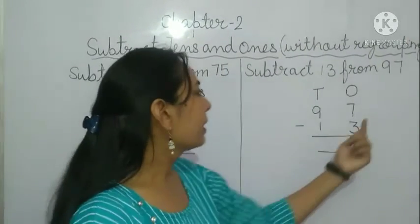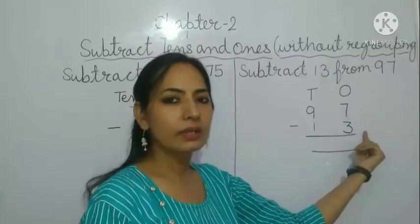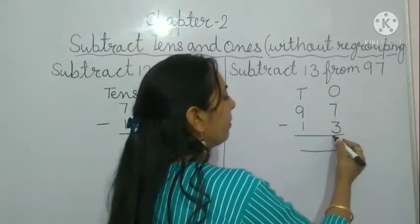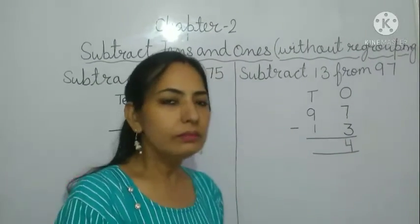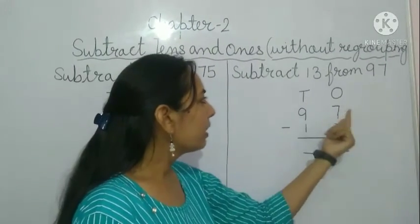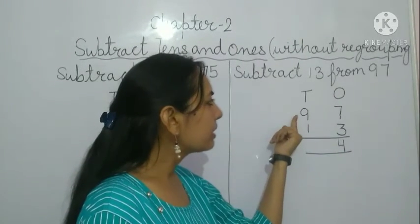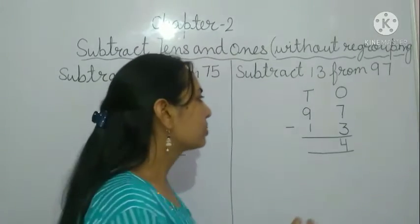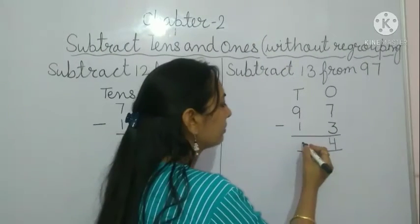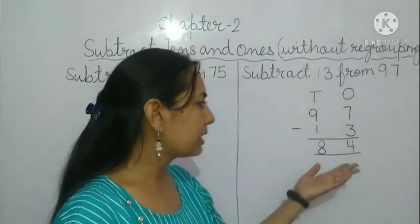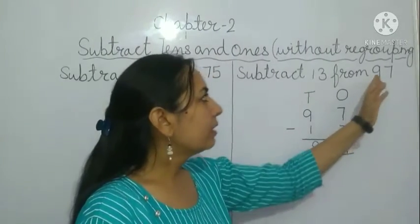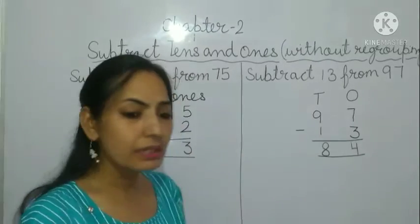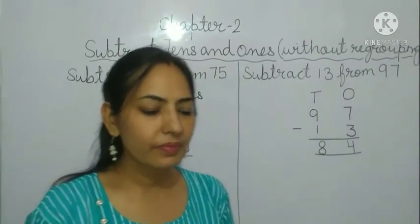Now we subtract: seven ones minus three ones gives four ones. Then at the tens place, nine tens minus one ten equals eight tens. So the answer is 84. We can say 97 minus 13 is 84.